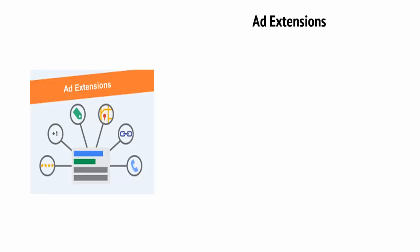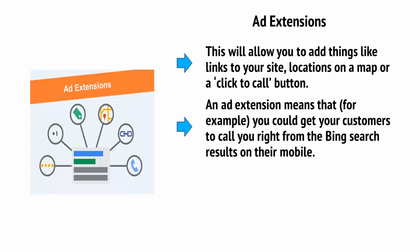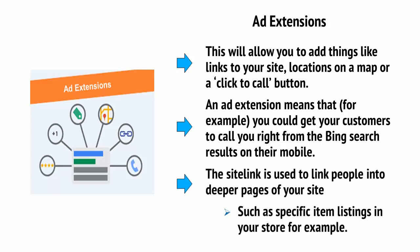Another neat feature of Bing is the ability to add ad extensions. This will allow you to add things like links to your site, locations on a map, or a click-to-call button. An ad extension means that, for example, you could get your customers to call you right from the Bing search results on their mobile. The site link is used to link people into deeper pages of your site, such as specific item listings in your store.